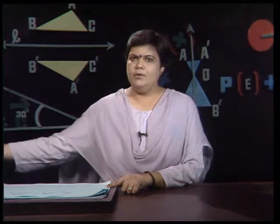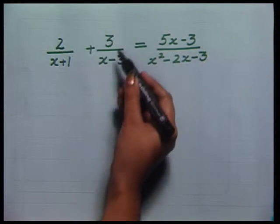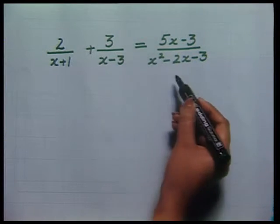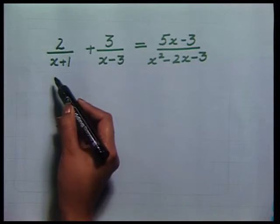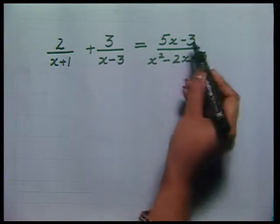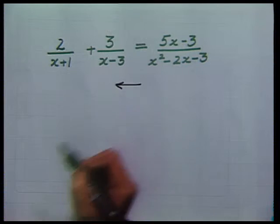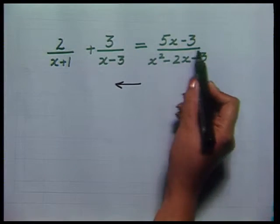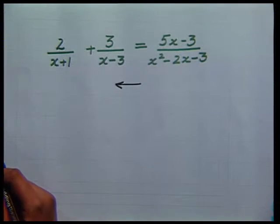For example, consider this. You are all familiar with how to combine 2/(x+1) plus 3/(x-3) and write it as (5x-3)/(x²-2x-3). It is done simply by taking the LCM and combining the numerator. What we are interested in today is to learn how to go in the opposite direction: given (5x-3)/(x²-2x-3), how do we go back into these two simple fractions?